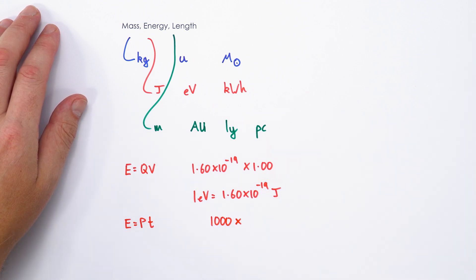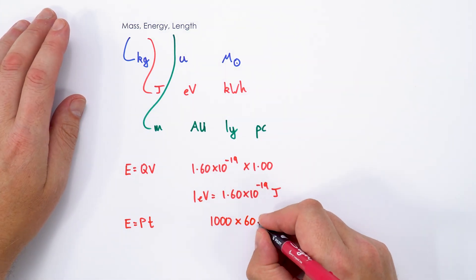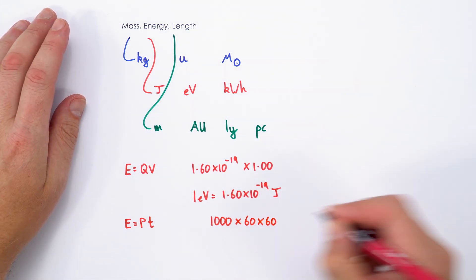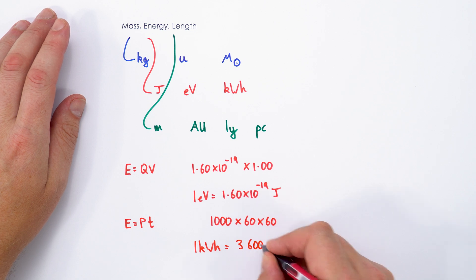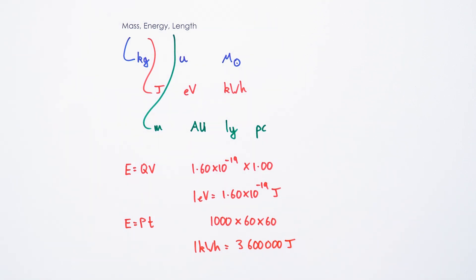We're going to multiply that by the time in seconds, our standard SI unit, which would be 60 minutes times 60 seconds in one hour. That means that one kilowatt hour is the same as 3,600,000 joules. So we've got an incredibly large amount of energy in one kilowatt hour.